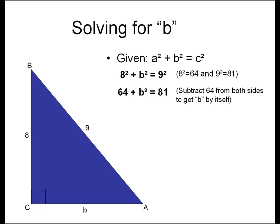Subtract 64 from both sides to get B by itself. B squared equals 17. Find the square root of B squared and 17. Round the answer to the nearest hundredth. B equals 4.12.